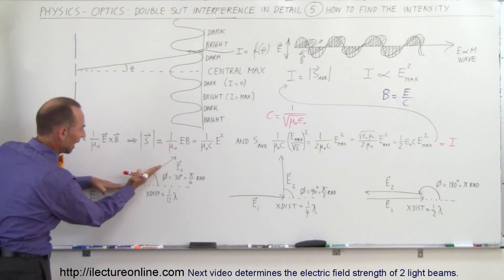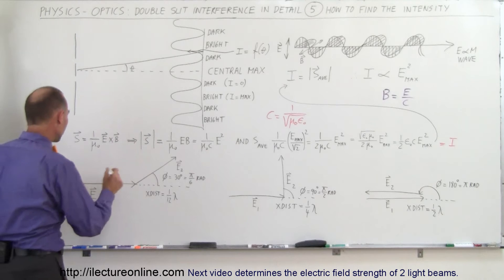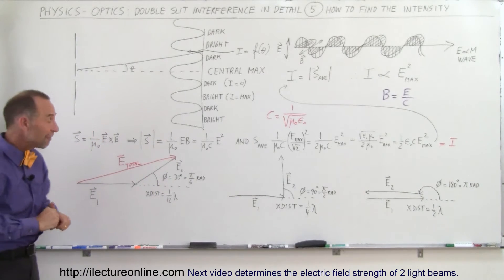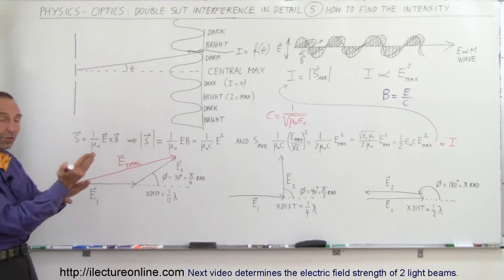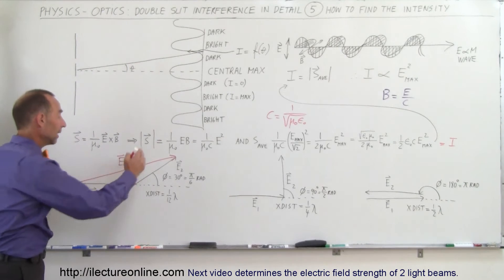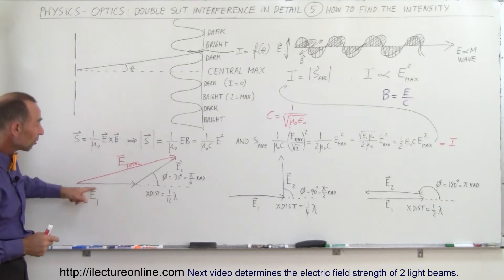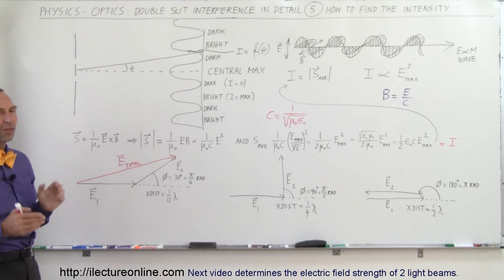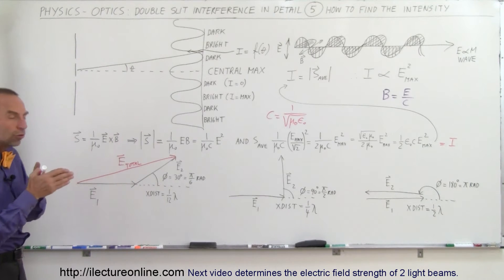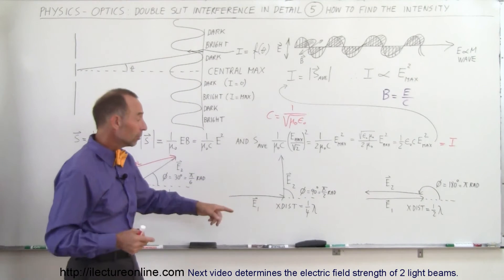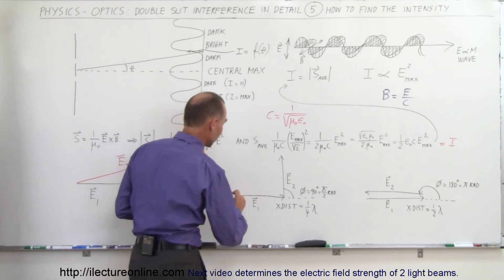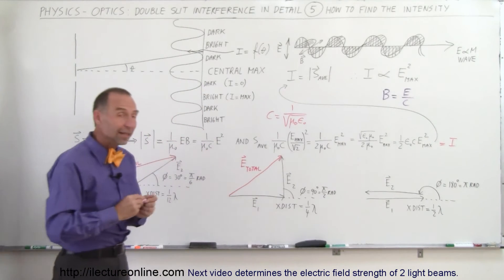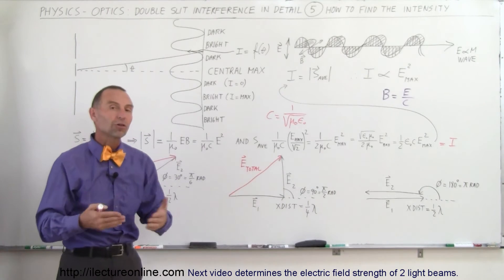With a 30° phase difference between the electric field oscillations, the total electric field when the two waves come together can be found by vector addition — treating the fields as phasors, one 30 degrees away from the other. The resulting total is almost equal to double the individual amplitude, so they're nearly completely in phase with almost complete constructive interference. When the phase difference grows to a quarter wavelength (90°), the total electric field E_total is noticeably smaller, resulting in partial destructive interference.